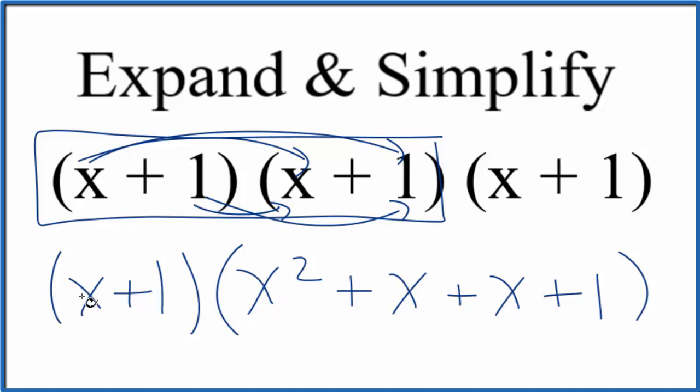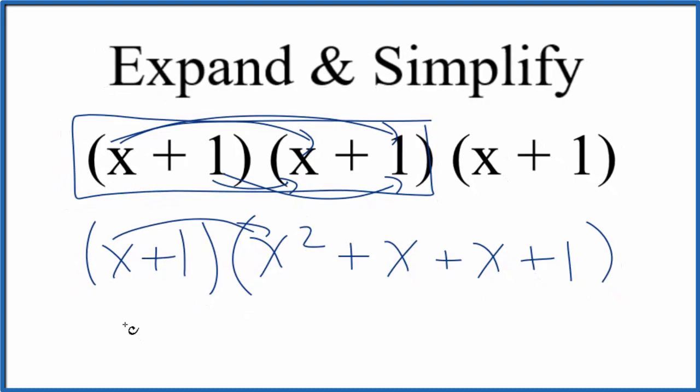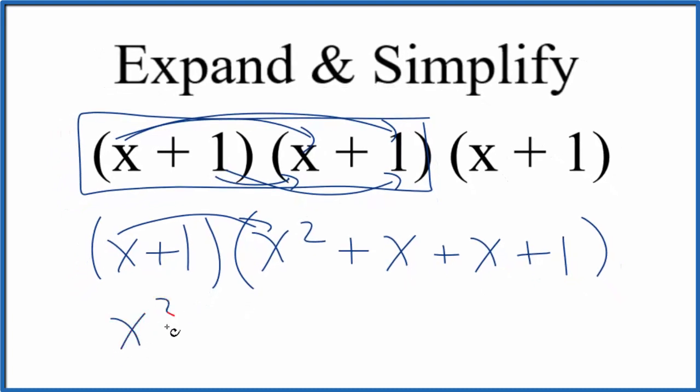So let's do the x. x times x squared, that gives us x cubed. x times x, that's x squared. We have x times the other x, that's x squared. And then we have x times the 1, that's x.